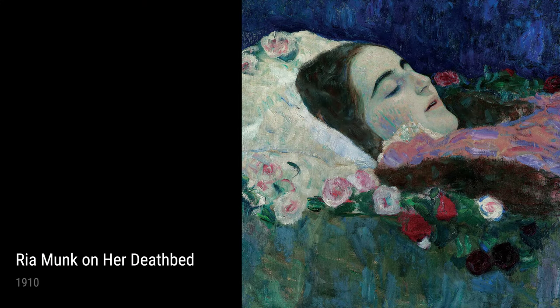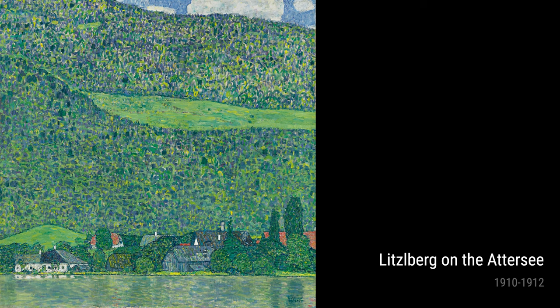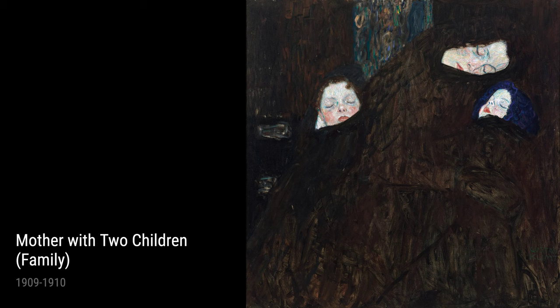Gustav Klimt, one of the most renowned artists of the early 20th century, was born in Austria in 1862. Growing up in Vienna, he had a passion for art from a young age. Klimt's life experiences greatly influenced his works of art, shaping his unique style and subject matter.